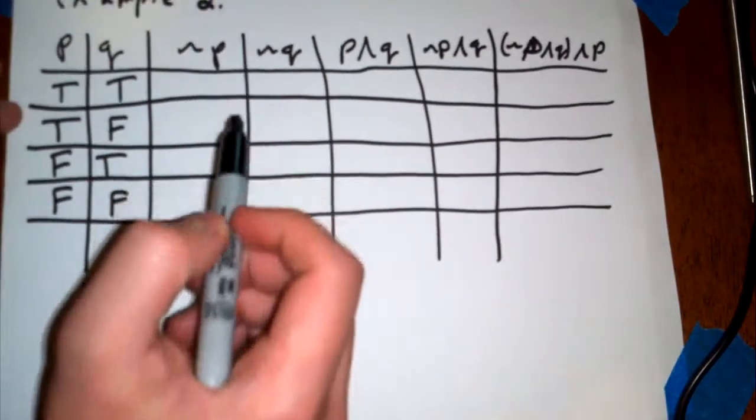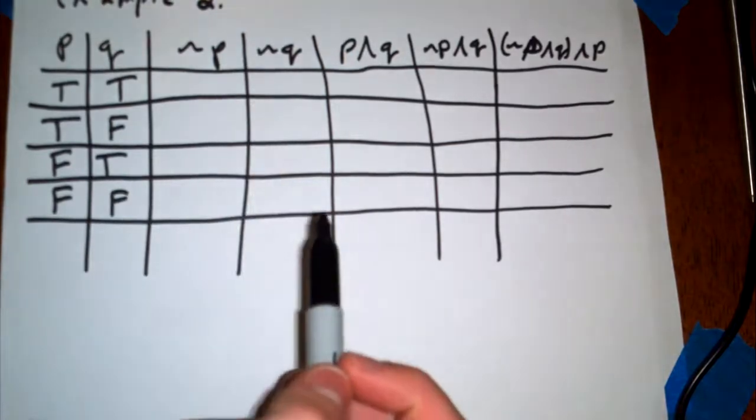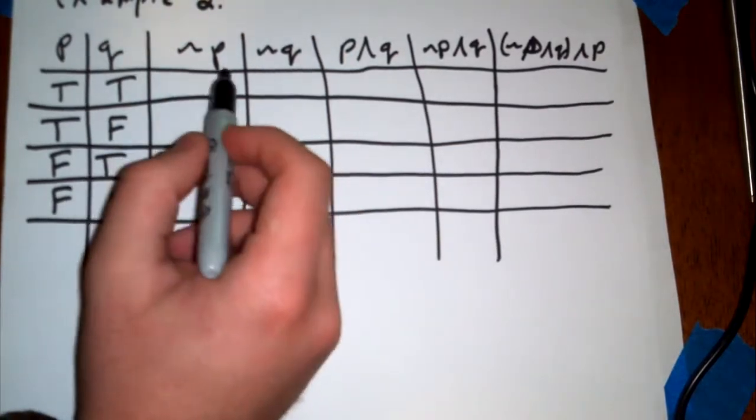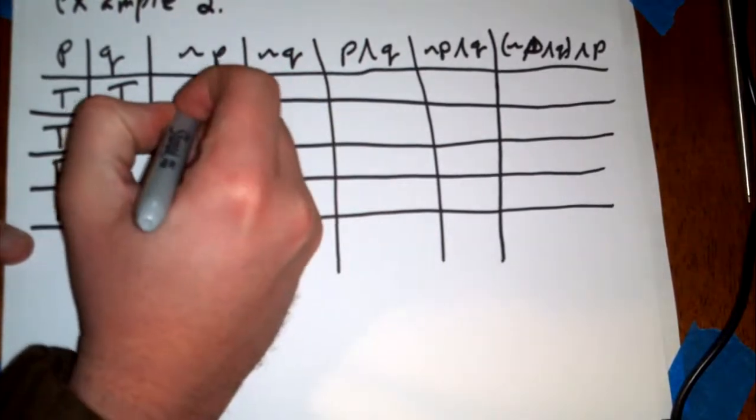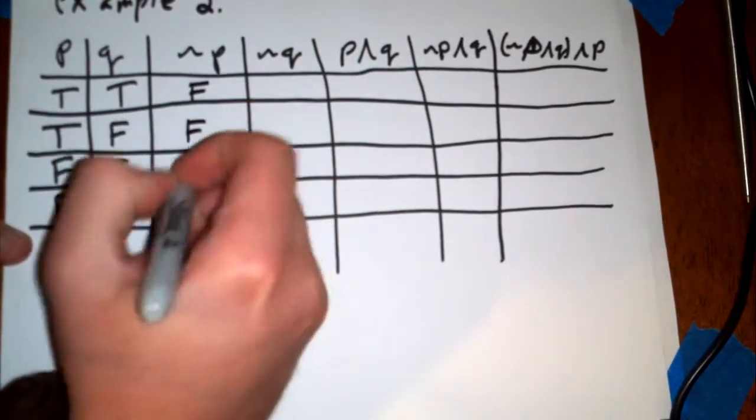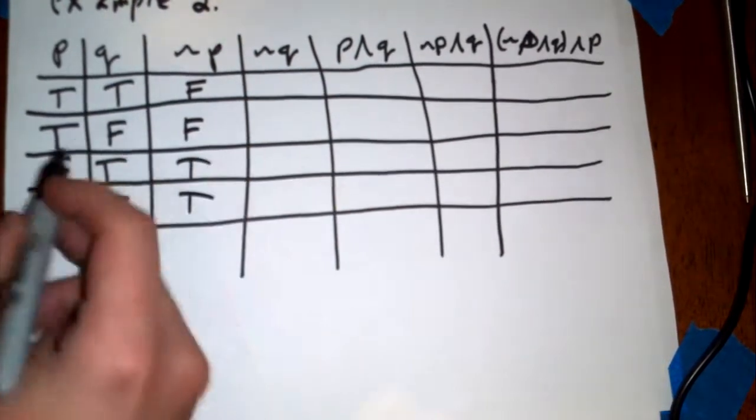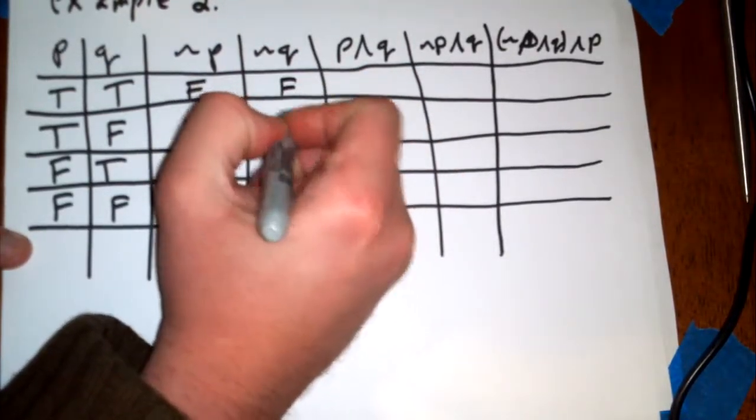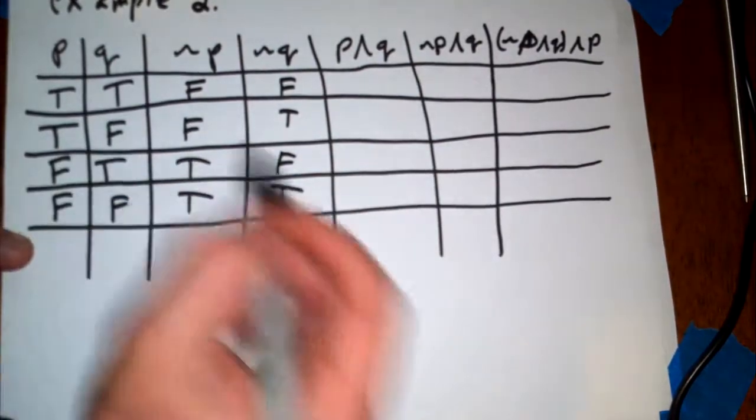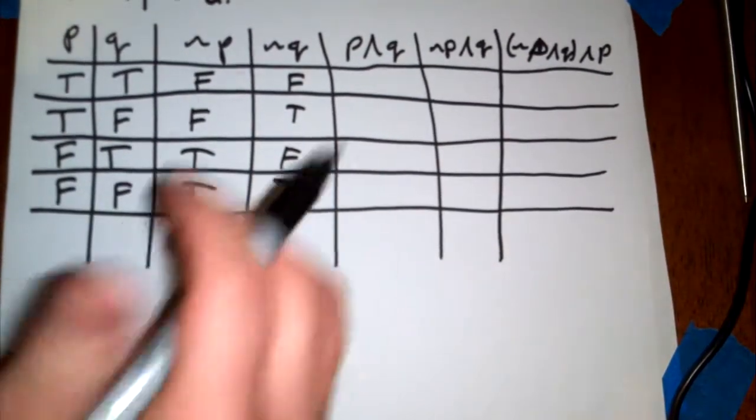So again, from the basic tutorial that I did, we have a NOT P. So it's the exact opposite of whatever P is. So let me write that out very quickly. So we have false, false, true, true. And the same thing with NOT Q. We have false, true, false, true. It's just the exact opposite, so nothing really that special.